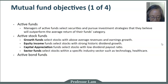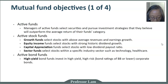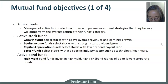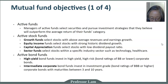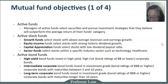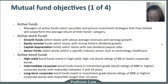Active bond funds include high yield bond funds, which invest in highly speculative bonds — they try to reduce risk through diversification, but they are still high risk. Intermediate corporate bond funds focus on investment grade bonds with an intermediate term. Long-term corporate bond funds focus on bonds with longer maturity. The important thing to remember about active funds is that the goal of an actively managed fund is to outperform the average.